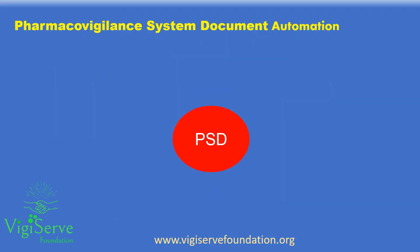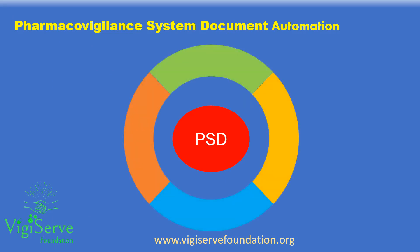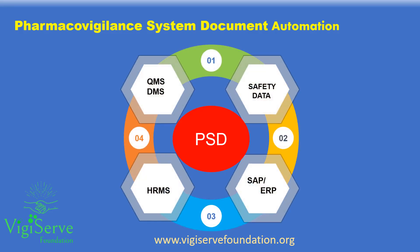Considering the changing regulatory requirements, companies may consider automating the pharmacovigilance system documents. The MAH needs to ensure proper validation and integration so as to ensure accuracy of the data.